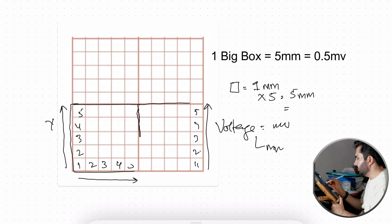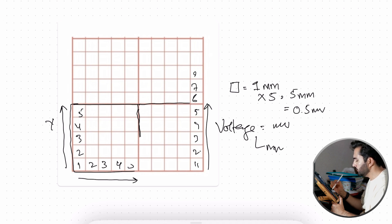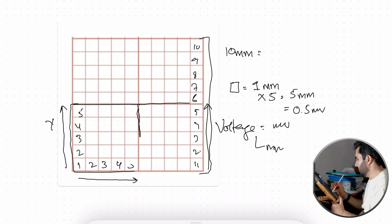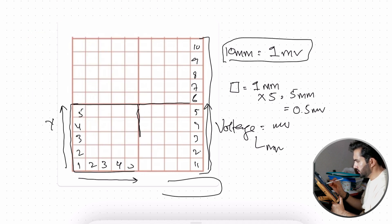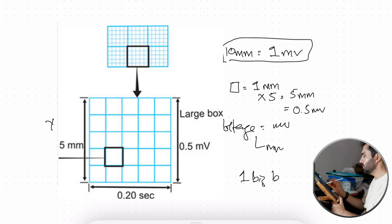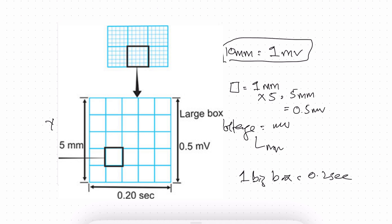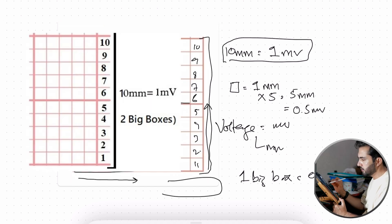Since each big box vertically has 5 small boxes, one big box vertically equals 5 mm. The standard calibration is 0.5 mV per 5 mm. So vertically, 10 small boxes — which is 10 mm — equals 1 millivolt. To summarize: horizontally, one big box equals 0.2 seconds; vertically, 10 small boxes or 10 mm equals 1 millivolt.